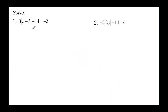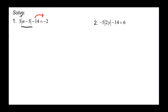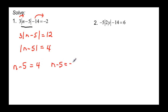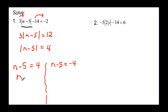We have to get the absolute value all by itself first before we can do anything else — peel the layers of the onion. Take the 14 to the other side and divide by 3. So 3 times the absolute value of n minus 5 equals 12, and then the absolute value of n minus 5 equals 4. That means n minus 5 could equal 4, or n minus 5 could equal negative 4.